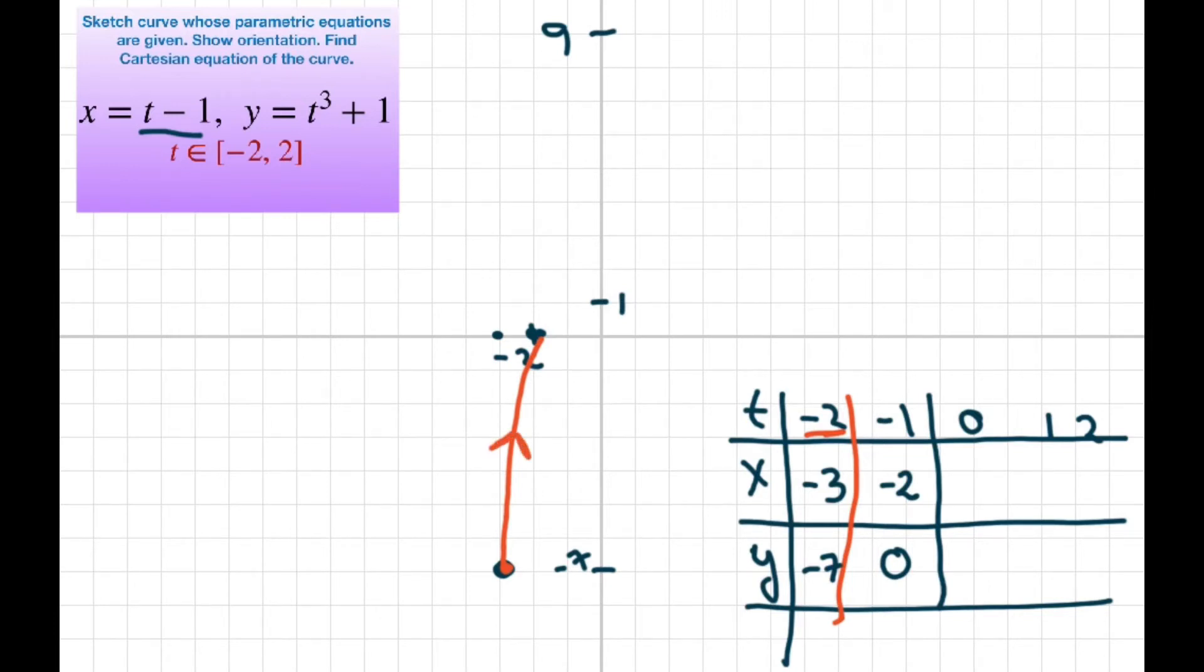Alright, at 0, we're going to get negative 1 comma 1. So that's going to be right there. So we're going through here. And then at 1, we're going 0 and then y will be 2. So there's that. So it's going to be a little swing this way.